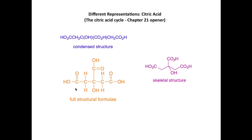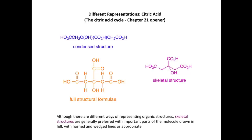For the skeletal structure, we have this relatively uncluttered representation where the C-H bonds and the carbon backbone aren't shown. Although there are a number of different ways of representing organic structures — three of which are shown here — it's the skeletal structures which are generally preferred, with the important parts of the molecule drawn in full using hashed and wedge lines as appropriate.